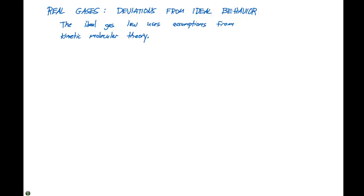The last section we'll talk about involving gases is real gases, which introduce deviations from ideal behavior. The ideal gas law uses some assumptions from kinetic molecular theory.